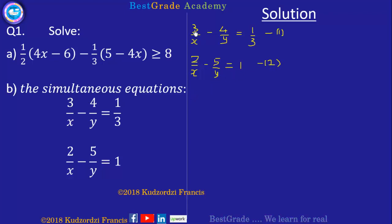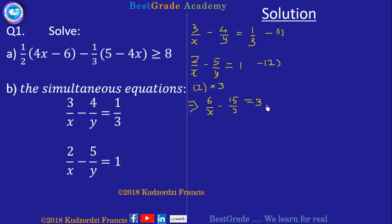We will eliminate one of the variables — that should be quicker than any other approach. The coefficient of 1 over x in equation 1 is 3 and in equation 2 is 2, so we treat 1 over x as the variable. Multiply equation 2 by 3 to get: 6 over x minus 15 over y equals 3. Call this equation 3.